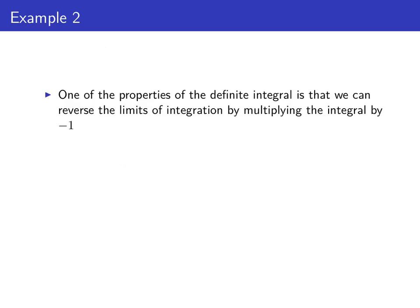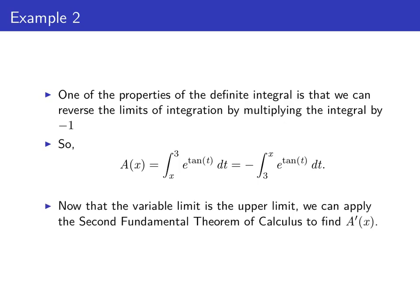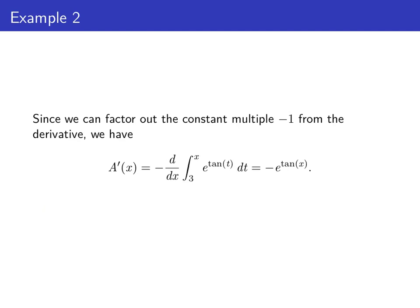Recall that one of the properties of the definite integral is that we can reverse the limits of integration by multiplying the integral by negative 1. This allows us to rewrite capital A so that the upper limit is the one that has the variable. In other words, capital A of x can be written as the opposite of the definite integral from 3 to x of e to the tangent of t dt. Now that the variable limit is the upper limit, we can apply the second fundamental theorem of calculus. Factoring out the constant negative 1, we see that A prime of x is the opposite of the integrand evaluated at x, so A prime of x is the opposite of e to the tangent of x.